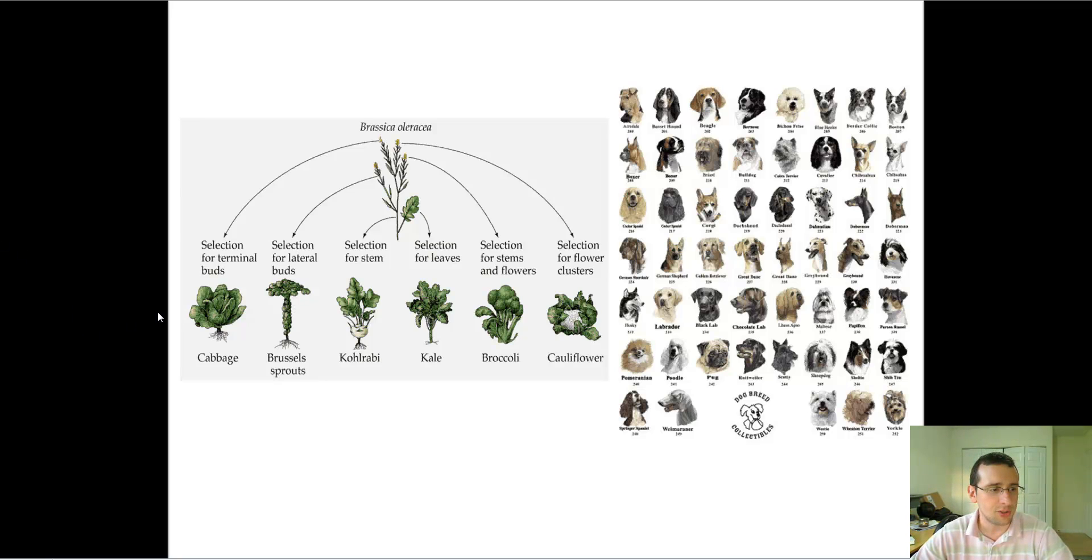All were made through differential selection for specific parts of the tree. If you select for larger terminal buds, you make cabbage. Select for lateral buds, you make brussels sprouts. Select for longer stems, you make kohlrabi. Select for leaves, you make kale. Select for stems and flowers, you make broccoli. Select for lots of flowers, you make cauliflower. All of these came from the same ancestral plant that's not even around anymore. We created new strands of that plant through progressive selection.